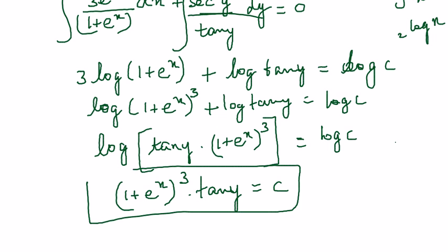The arbitrary constant could be anything but here in this case since we are having log throughout we have taken it as log c. It can be anything but depending on the problem we choose it for our convenience. So this is a breezy 6 mark sum to grab.